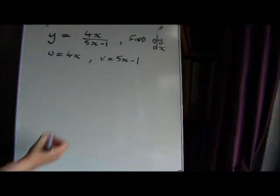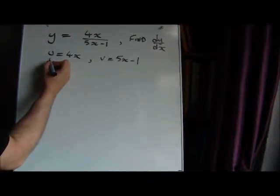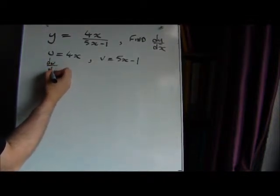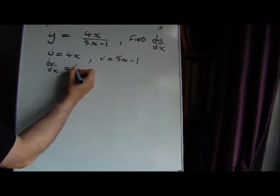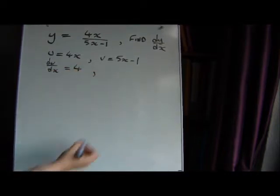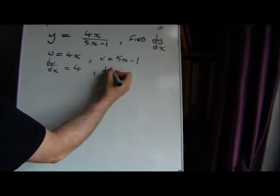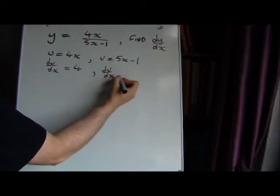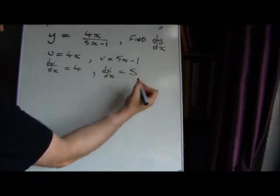We need to differentiate these two expressions. We'll differentiate u to get du/dx and it's just going to be 4. We'll differentiate v to get dv/dx and that will be 5.